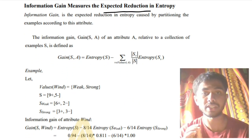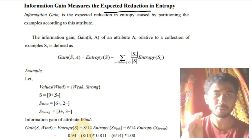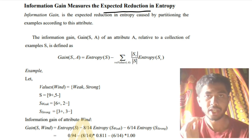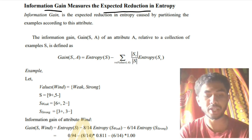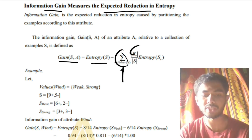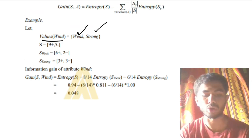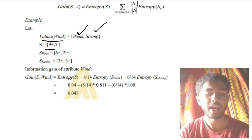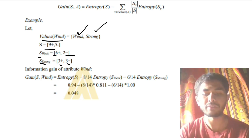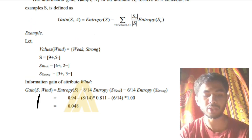Information gain is the expected reduction in entropy. When we solve for the entropy there is an expected reduction, and that reduction is calculated using information gain. The formula is: Gain(S, A) = Entropy(S) − Σ (|Sv| / |S|) × Entropy(Sv). An example: wind has values weak and strong; S has nine positive and five negative examples; weak has six positive and two negative; strong has three positive and three negative.